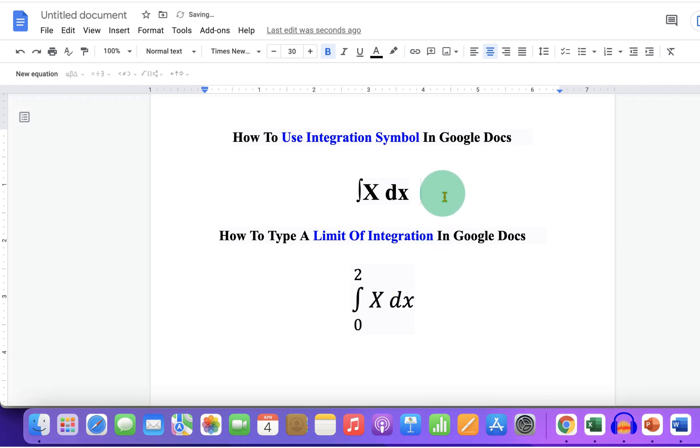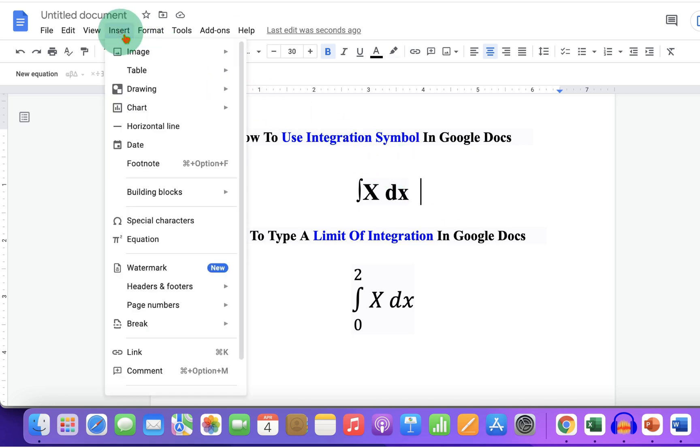First click inside the Google Docs where you want to insert the symbol, then go to the insert tab and select the option special characters.